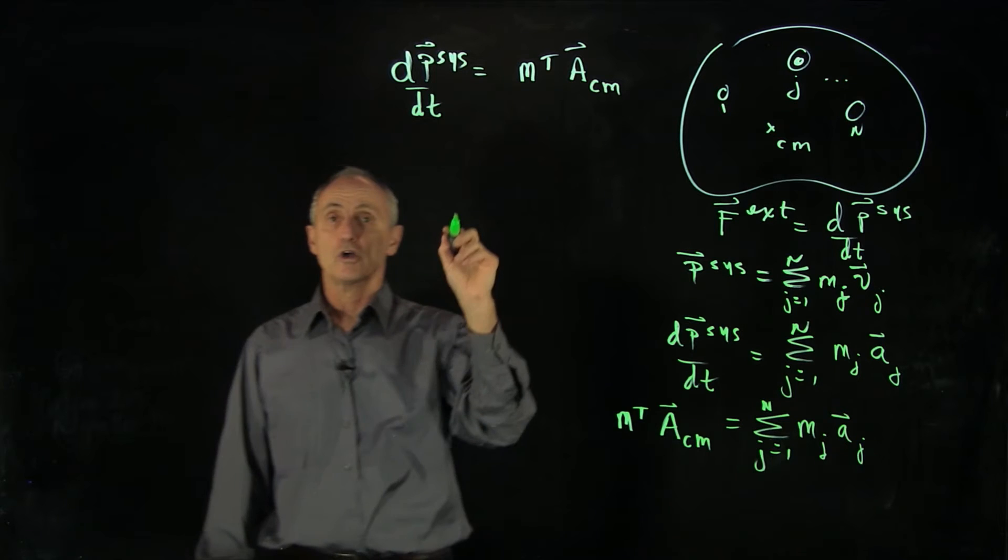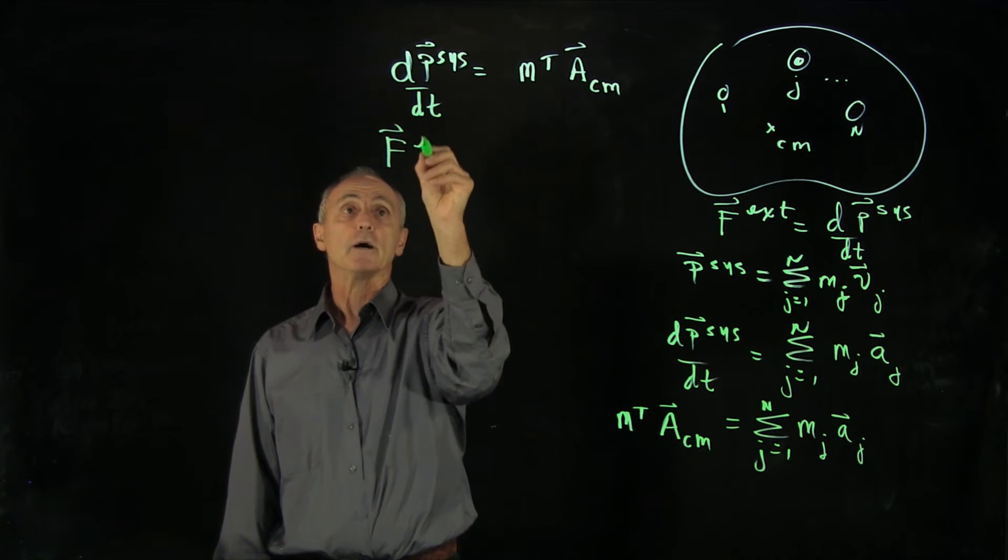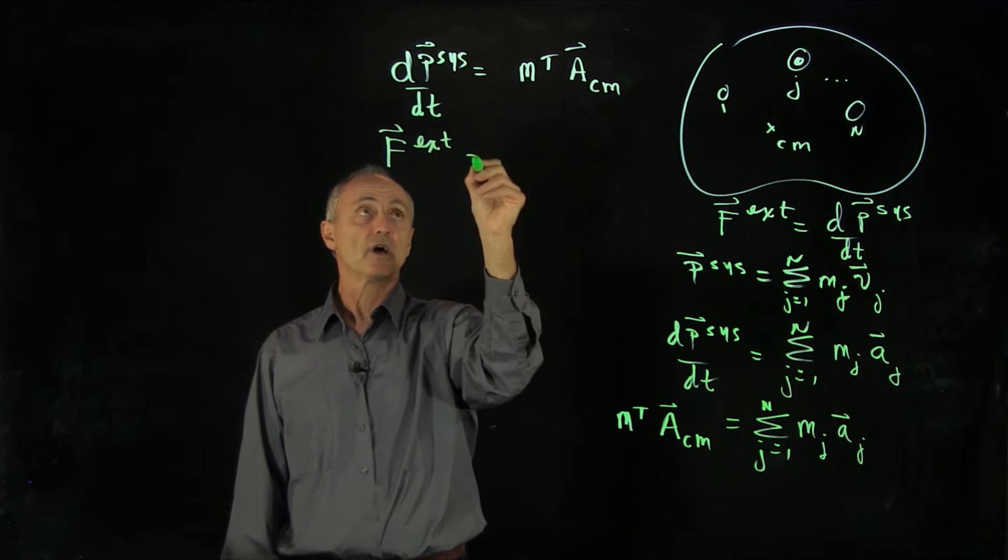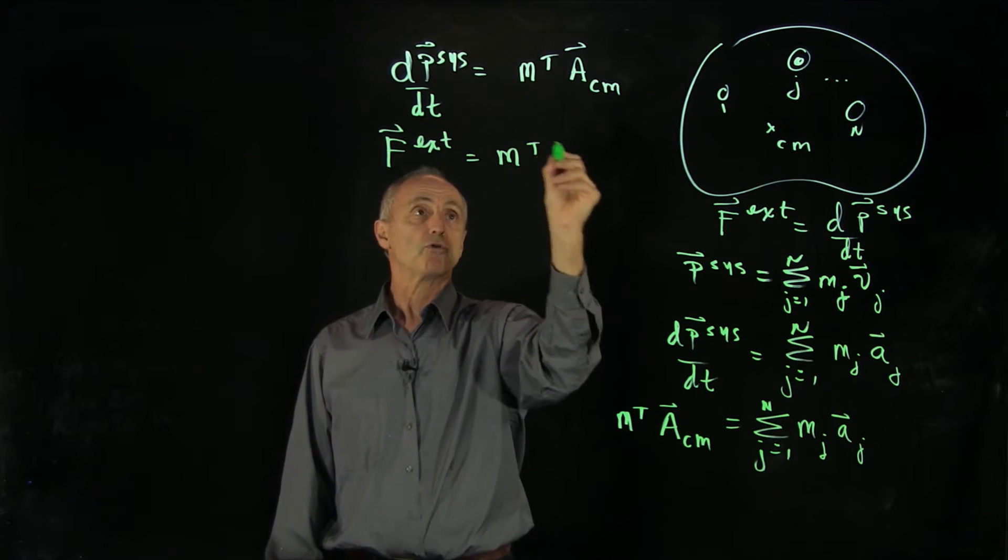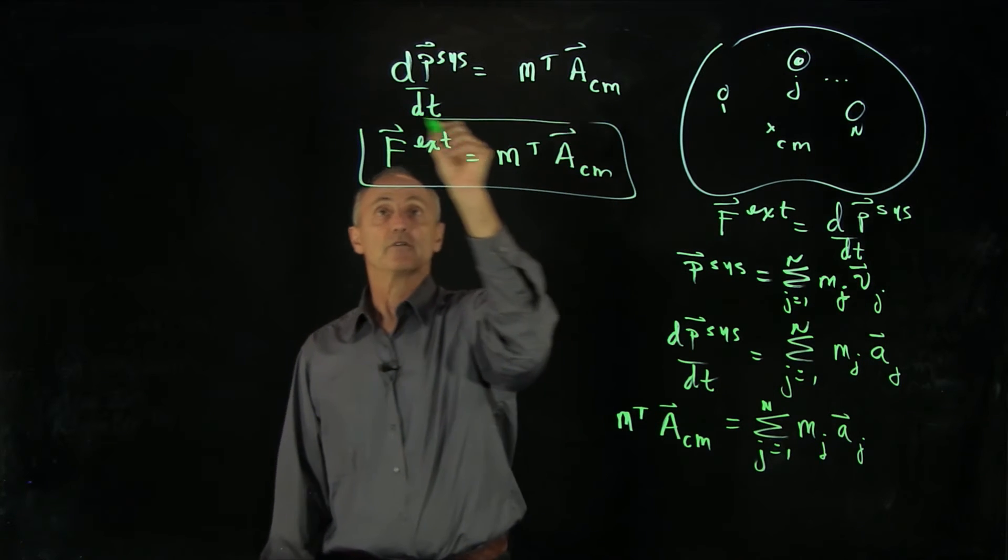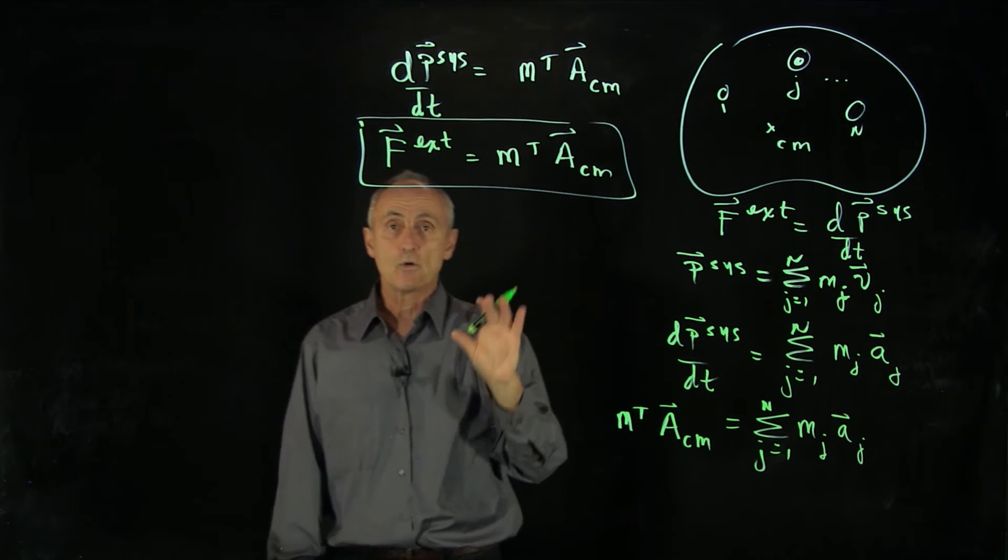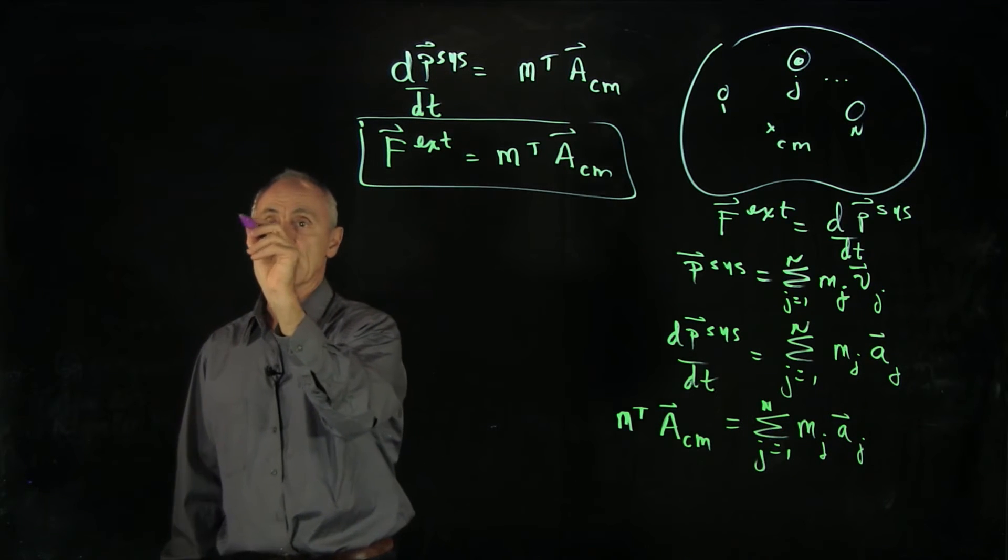And our combination of Newton's second and third law now becomes that only the external forces cause the momentum of the system to change. So that's equal to the total mass times the acceleration of the center of mass. Now, what does this equation really mean? So let's draw our pictures again.